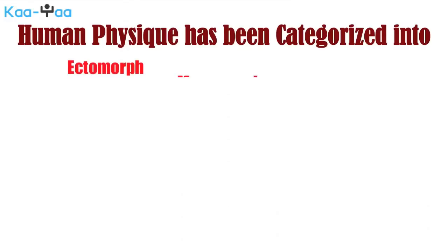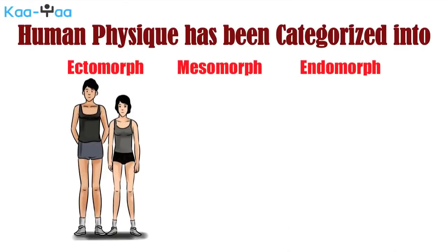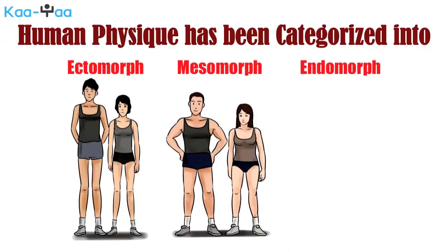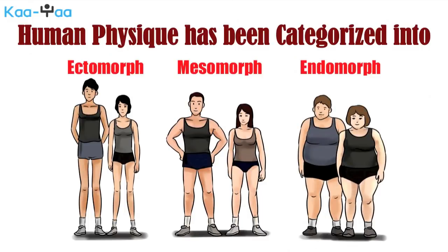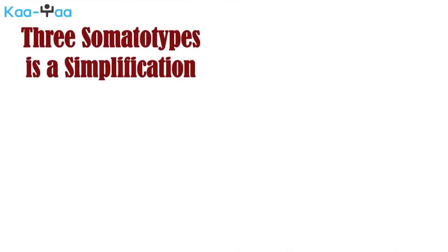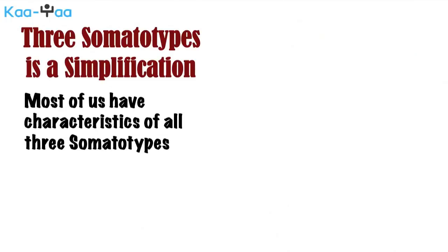Human physique has been categorized into three Somatotypes: ectomorph, mesomorph, and endomorph. An ectomorph body type is characterized as an individual who is naturally skinny with little muscle development — this individual finds it hard to gain weight. A mesomorph body type is characterized as an individual who is naturally muscular with an athletic body and can easily gain and lose weight. An endomorph body type is characterized as an individual who has a tendency of retaining fat and has a round body — this individual finds it hard to lose weight. We must keep in mind that something as diverse as the human body cannot be limited to just three somatotypes. The description provided above is just for extreme cases. Most of us have characteristics of all three somatotypes.